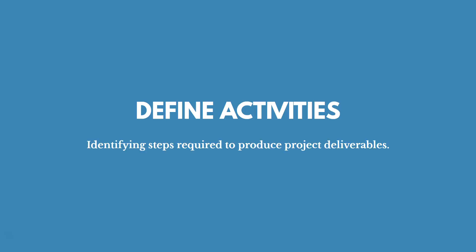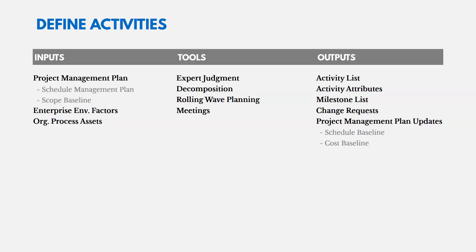Now let's talk about Define Activities — identifying steps required to produce project deliverables. The inputs include the project management plan (including the schedule management plan, which tells you how to define activities), enterprise environmental factors, and organizational process assets. The tools are expert judgment, decomposition, and rolling wave planning.